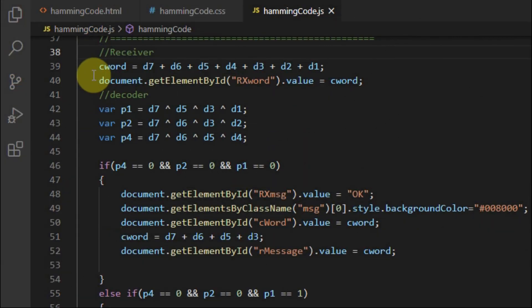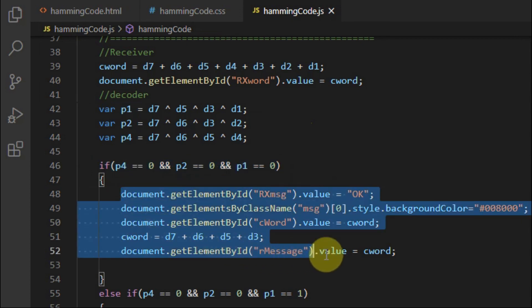On the receiver side, the received codeword is passed into the decoder, which extracts the 3 parity bits. And as mentioned before, if the value of the parity bits is 0, then no error has occurred, and we extract the message and display it and send it to the destination.